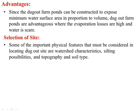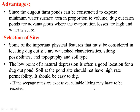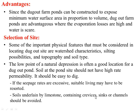Selection of site: Some of the important physical features that must be considered in locating a dugout site are watershed characteristics, silting possibilities, topography, and soil type. The watershed must be capable of furnishing the annual runoff sufficient to fill the dugout. The low point of natural depression is often a good location for a dugout pond. Soil at the pond site should not have a high rate of permeability and should be easy to dig. If the seepage rates are excessive, suitable lining may have to be restored. Soils underlain by limestone containing crevices, sinks, or channels should be avoided.